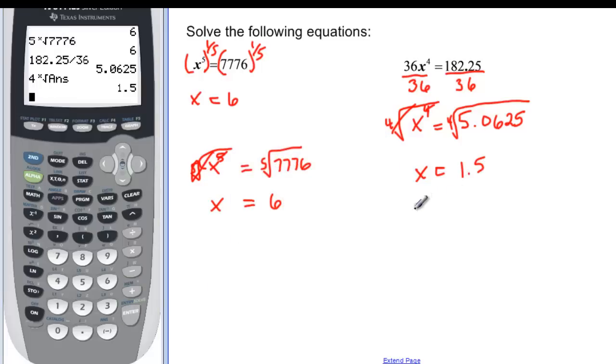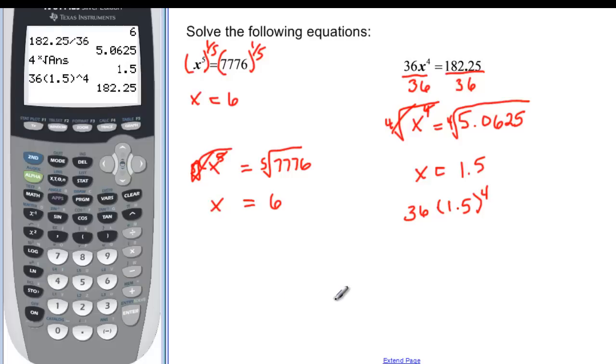And if we just want to double check that, we could just plug and chug. 36 times 1.5 to the fourth. Let's see if we get 182.25. 36 times 1.5 carat 4. And sure enough, 182.25. So we know that x is equal to 1.5.